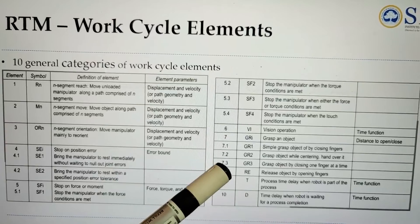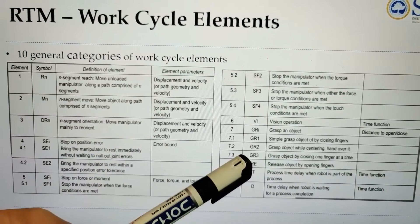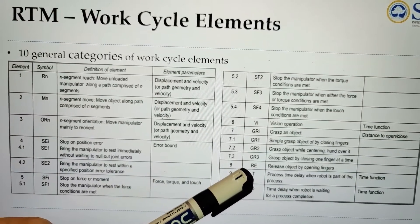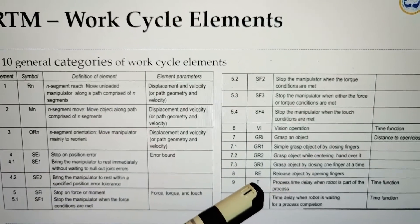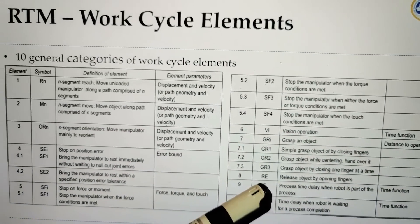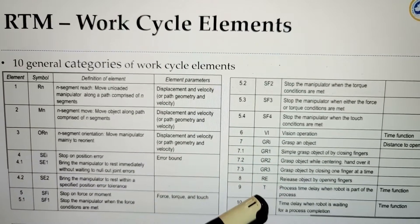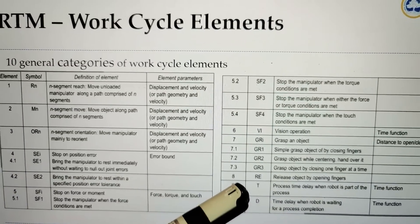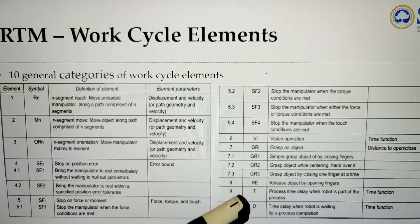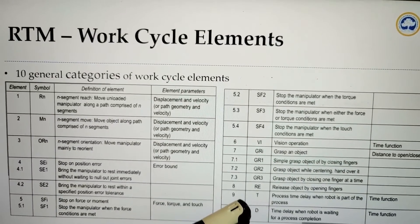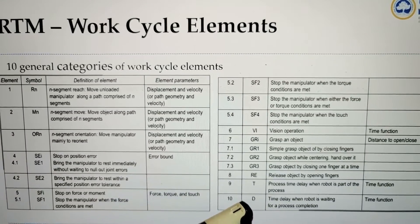VI is used for vision operations. GR categories are used for grasping an object — whether by closing the fingers, handing over it while centering, or closing one finger at a time — with different symbols for each. RE denotes releasing an object by opening the fingers. T and D denote process time delay and time delay when the robot is waiting for process completion, respectively.